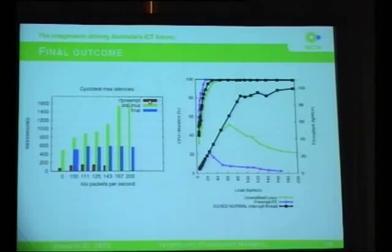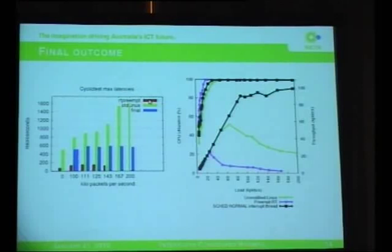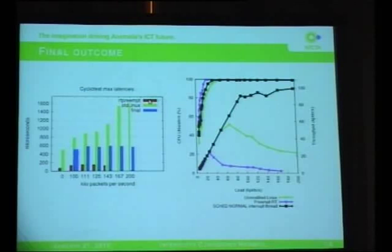Q&A: A question about the graphs - what does it mean to have the throughput higher than the load on the left side? The speaker clarifies: that's the CPU usage on the left axis, and the throughput is shown separately on the right.